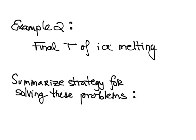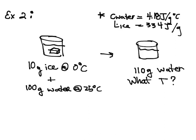Now I'm going to give another example — we'll find the final temperature of some ice melting in warm water, and then I'll summarize the strategy for solving these types of problems. We have 10 grams of ice at zero degrees C and 100 grams of water at 25 degrees C. The ice is going to melt, giving us 110 grams of water, and we want to know the final temperature. We need to think about what's happening to the ice and the water as they come into thermal equilibrium.